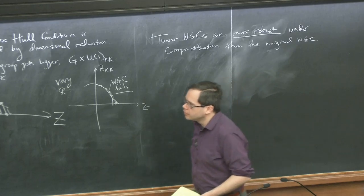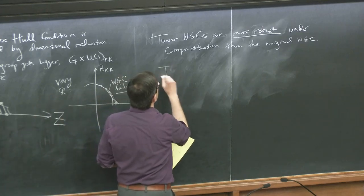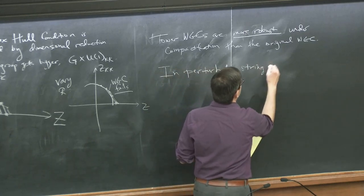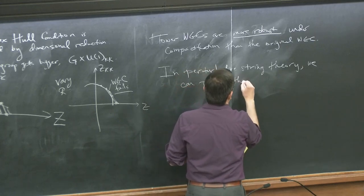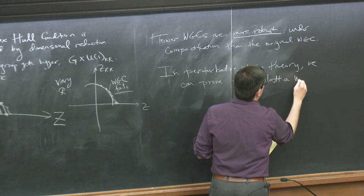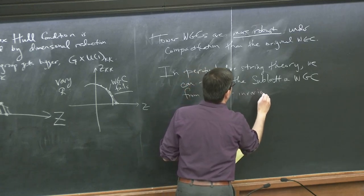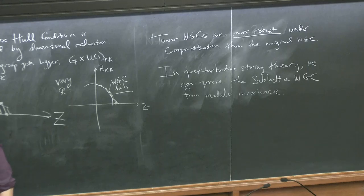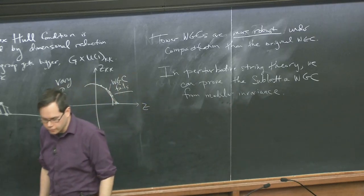That's one reason to think these might be plausible statements. Another reason is that they connect nicely to the Distance Conjecture ideas of Ooguri and Vafa. And a final reason is that in perturbative string theory we can actually just prove that the statement is true — it follows from modular invariance. It's possible to show just by studying a modular invariant partition function with a chemical potential turned on, that charge states exist within a sublattice and obey a bound that looks like the Weak Gravity Conjecture bound.